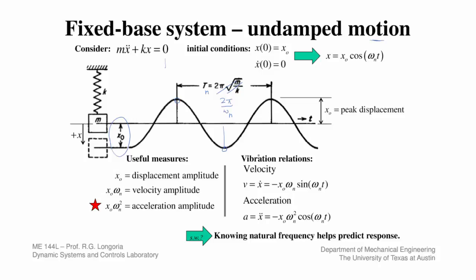The neat thing about just remembering this real simple case is that it allows you to remember some very basic relationships between displacement, velocity, and acceleration. Once you know x₀, you should be able to predict peak velocity. That's just going to be x₀ times the natural frequency. Acceleration is just another derivative, and here are those derivative relationships. You can see that if you just know two quantities like x₀ and natural frequency, you know all of those peak quantities such as peak velocity, peak acceleration.